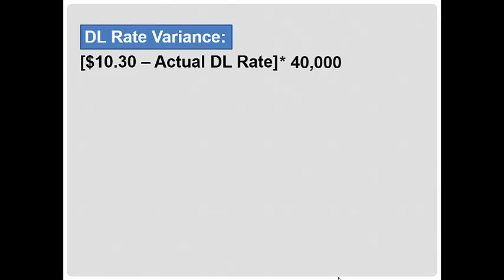We know the actual quantity of labor hours was 40,000 and we know the labor rate variance was $8,400 unfavorable. Now make a special note that by the way we have plugged in to this formula, the unfavorable variance would be a negative number because we know the actual labor rate is higher than $10.30. A favorable variance would be a positive number.